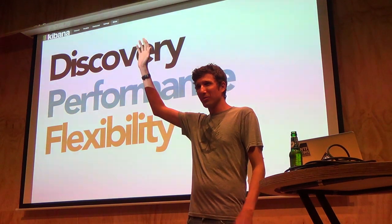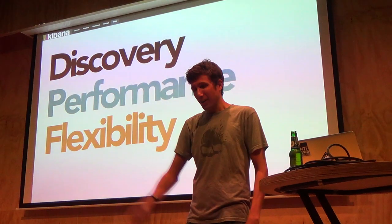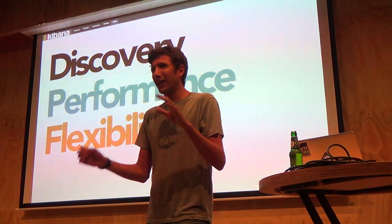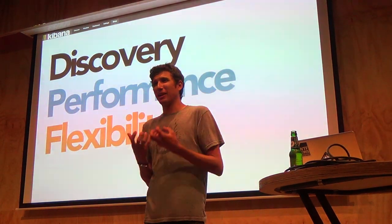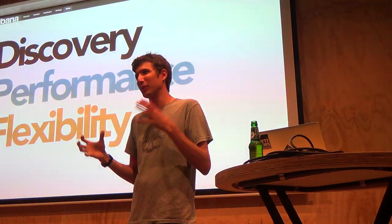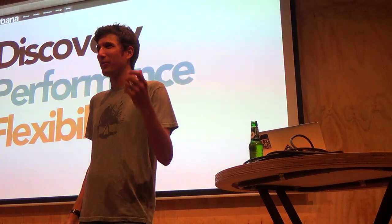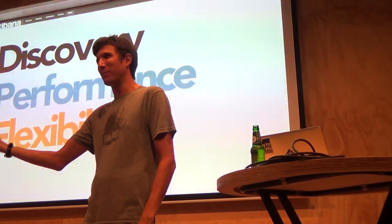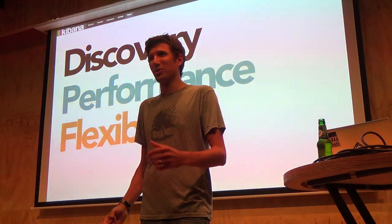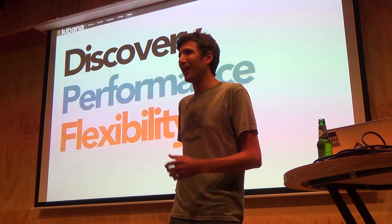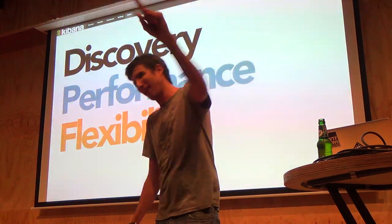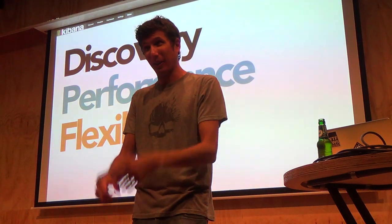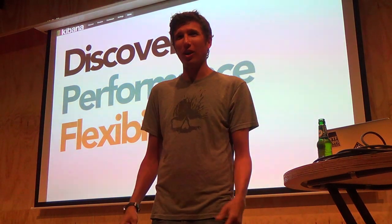Quick show of hands — used facets? Used aggregations? In facets, each facet was its own self-contained thing; they couldn't influence each other. For example, the terms facet could find the top 5 of something, and the stats facet could find the min, max, and average of something. But you couldn't find the top 5 things and then find the average of some field within them, until the terms stats facet came along — which was basically a lot of copy and paste.